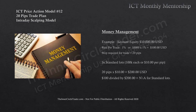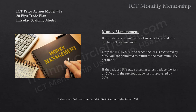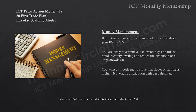This model with a 20-pip stop and 1% risk does not allow trading with a standard lot, so that's not applicable here. If your demo account takes a full R% loss, drop R% by 50% and return to maximum R% only after recovering 50% of the loss. If the reduced R% trade also loses, reduce by 50% again until recovered. If you take five winning trades in a row, drop R% by 50% — you're likely due a loss. This builds in equity leveling and reduces the likelihood of a large drawdown, keeping a smooth equity curve that slopes higher.